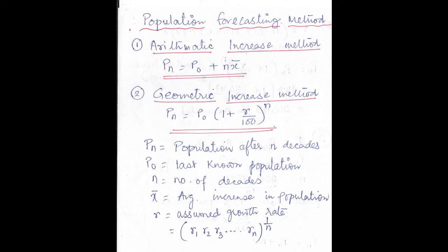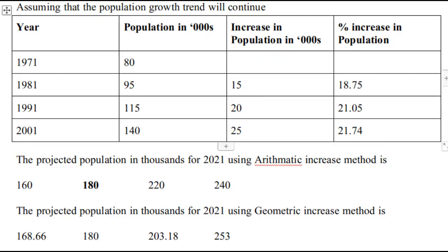Now we will solve 2 to 3 numericals from the GATE paper and discuss the method. The question: assuming that the population growth trend will continue, a table is given. Find the projected population in thousands for 2021 using the arithmetic increase method, and also using the geometric increase method. Please note down the question in your notebook before continuing.